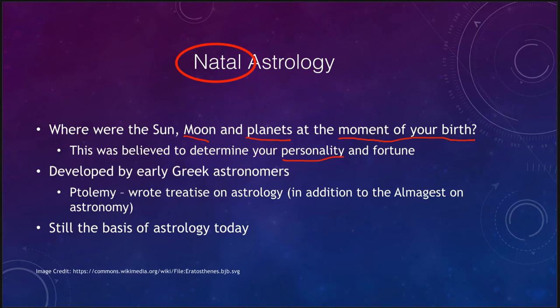That's quite different from the astrology you tend to look at today. Today, you get a couple of sentences based on the month in which you were born and what constellation is associated with it. The original astrology was much more complicated, looking at not just the position of the sun, but also the moon and the planets — all of which would have an impact on your personality and your destiny.